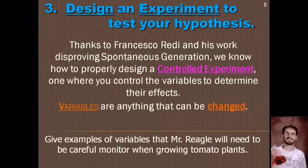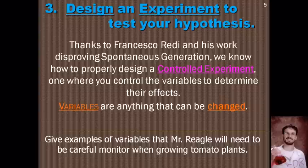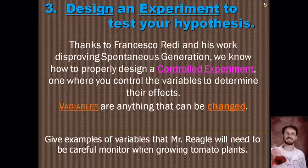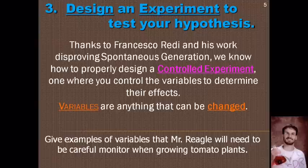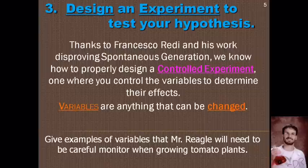In any experiment, variables are things that can be changed. Let's think of some variables that Mr. Regal would have to be careful of in this experiment — what can affect plant growth? Water and sunlight are the easy ones. See if you can write down a couple more in addition to water and sunlight that we might bring up in class. What are some things that can affect how big and how well plants grow?